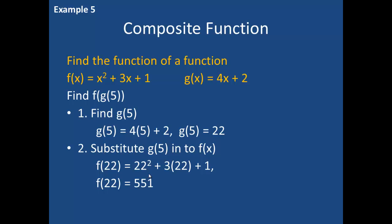We can also find a composite function, which is finding the function of a function. Using the same f of x and g of x, this time I am asked to find f of g of 5. When finding a composite function, we start from the inside, so first I find g of 5, which equals 22. Looking back at the original problem, f of g of 5, I now replace g of 5 with 22 and find f of 22: 22 squared plus 3 times 22 plus 1, which means f of 22 equals 551. Therefore, f of g of 5 equals 551.